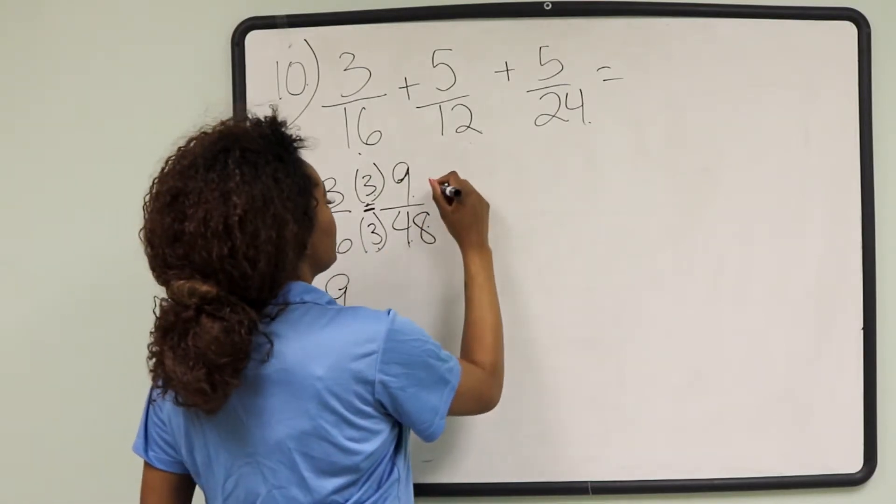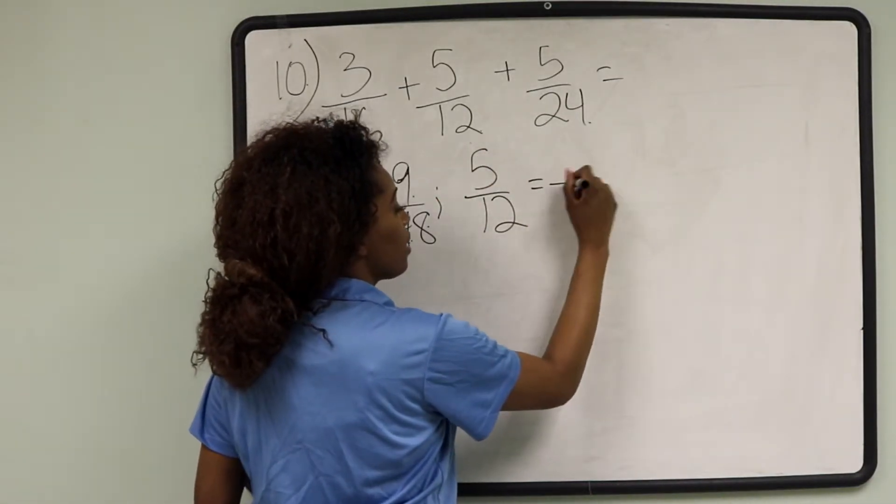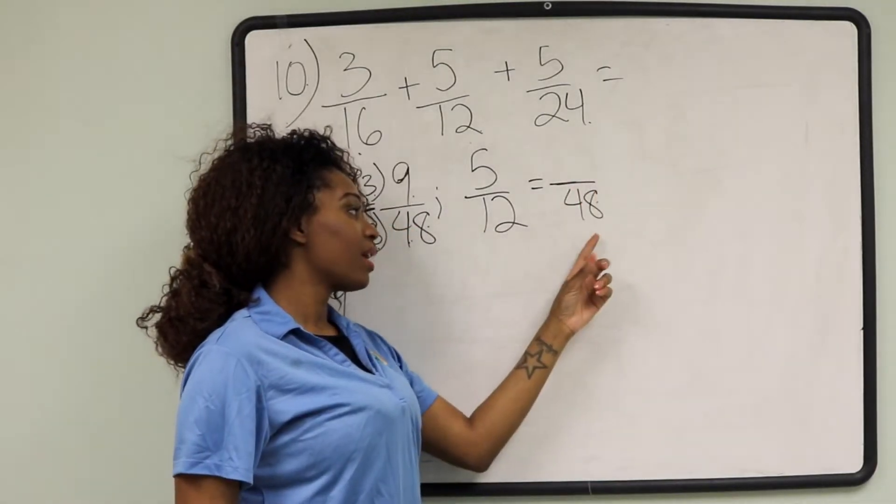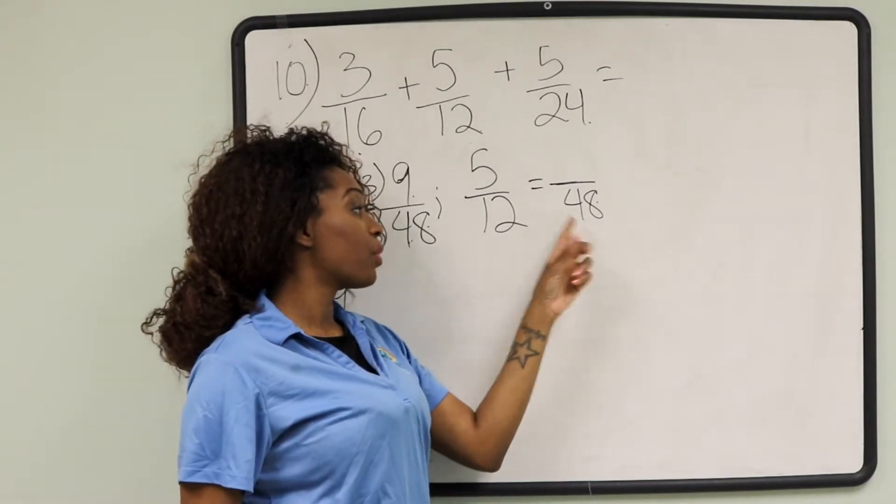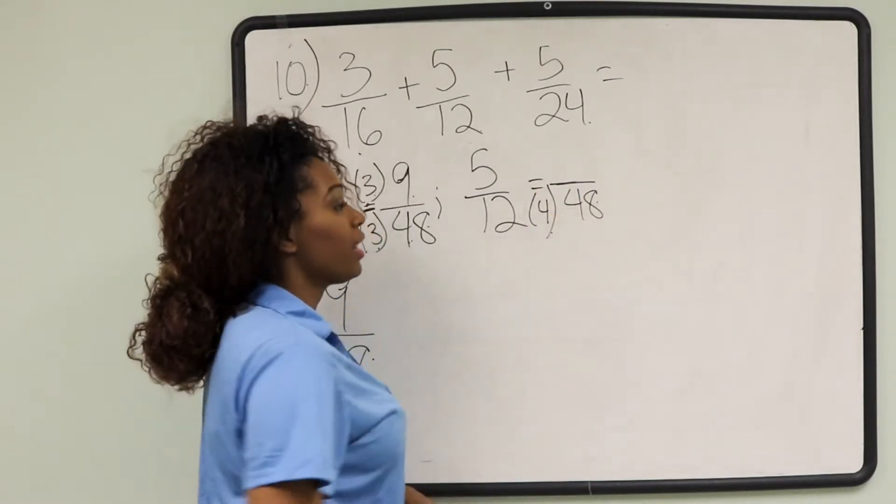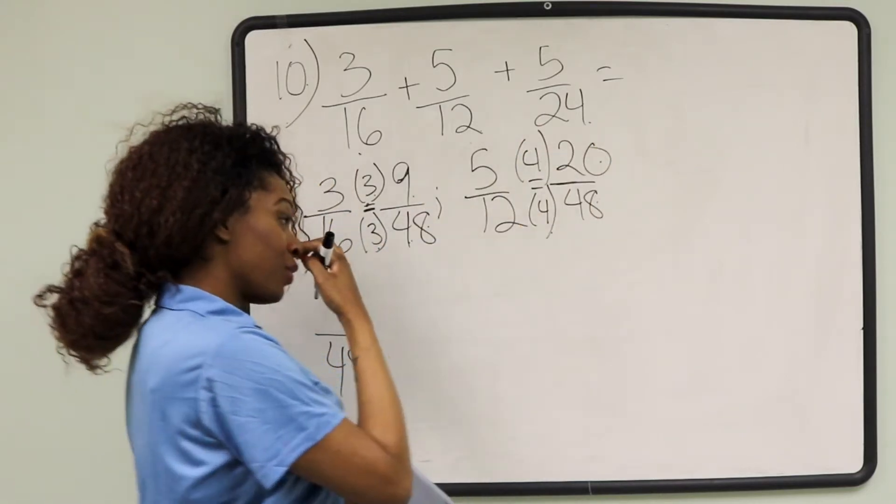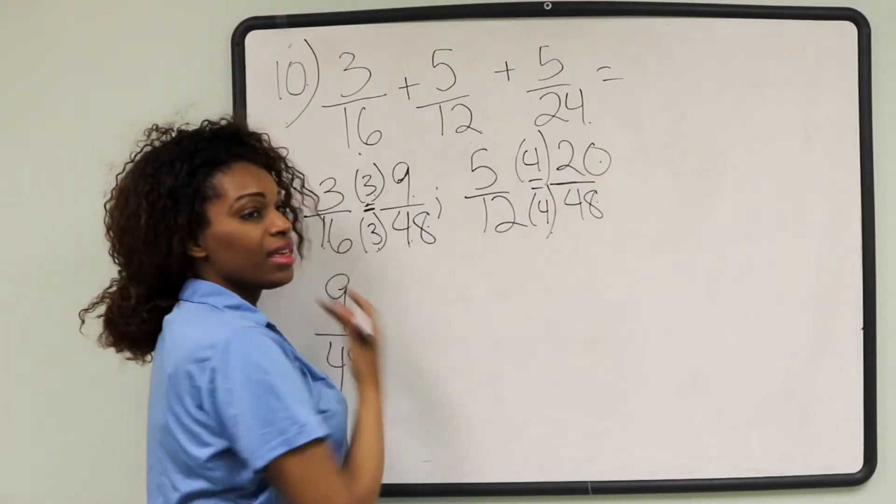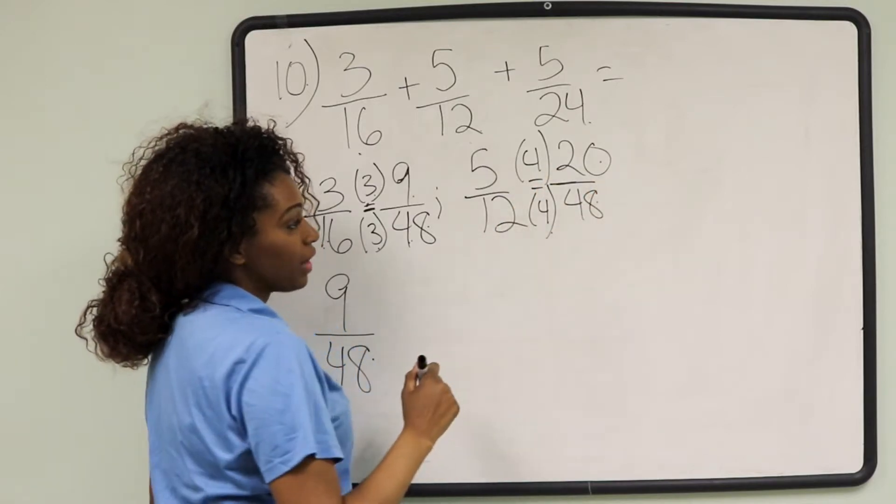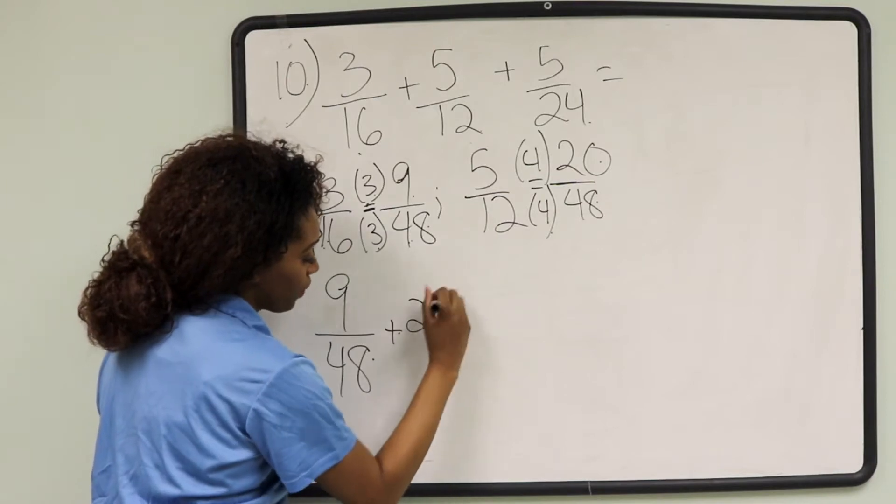We're going to go from 5 over 12 to a number over 48. In order to get from 12 to 48, we have to multiply by 4 in the denominator. 12 times 4 will give us 48. 5 times 4 is 20. Our new fraction is now 20 over 48. It's the same as 5 over 12, it's the equivalent fraction. So we have 9 over 48, and we're going to add 20 over 48.